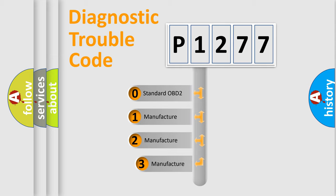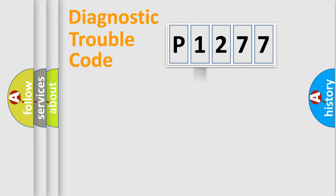If the second character is expressed as zero, it is a standardized error. In the case of numbers 1, 2, or 3, it is a more precise expression of the car specific error.